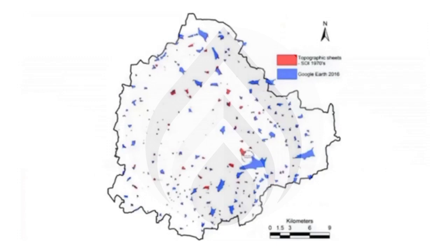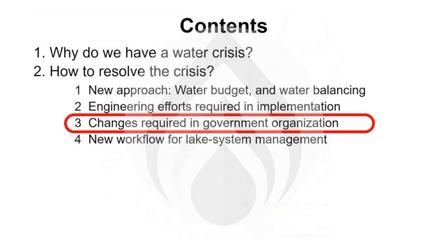Note that the overall holding capacity of the city lakes may not be sufficient. In that case, some water treatment may have to be done outside the city limits. The main problem is that water assets belong to different agencies. As a result, they do not plan and manage a unified water system. Therefore, for smooth implementation, some changes are required in the government organization.